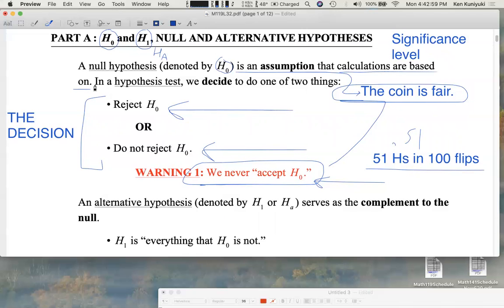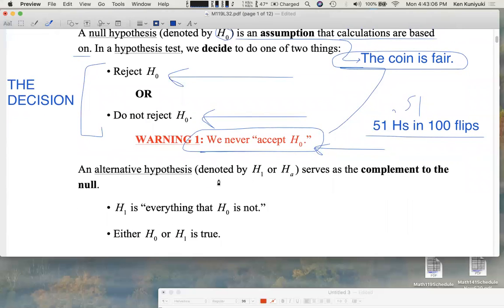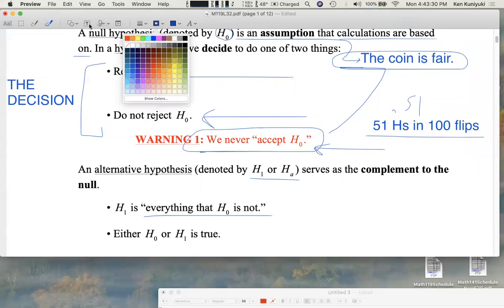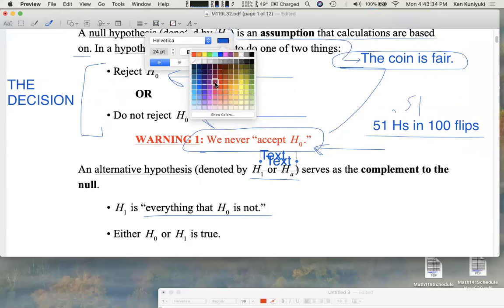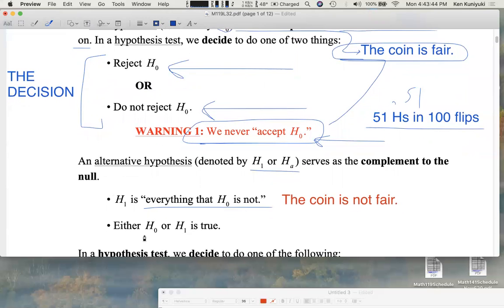So basically, we live in a world where either the null hypothesis is true or the alternative hypothesis is true. Again, we denote this by H sub 1 or H sub A, it's your choice. And this will serve as the complement to the null hypothesis. You can think of the alternative hypothesis as everything that the null is not. So if the null says the coin is fair, the alternative says the coin is not fair or is biased. And again, we live in a world where either the null or the alternative is true.